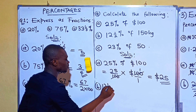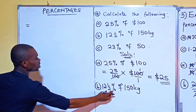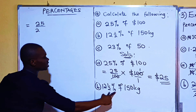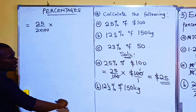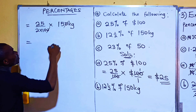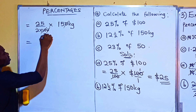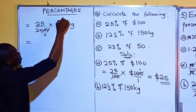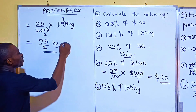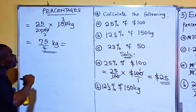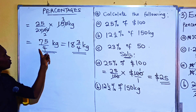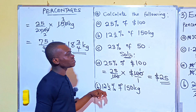For 12½% of 150 kg: first change 12½ to an improper fraction, which is 25 over 2. Then multiply by 150 over 100. Simplify: 100 and 150 share a factor of 50, giving 2 and 3; then simplify further to get 75 over 4 kg, which as a mixed number is 18 and 3 quarters kg.